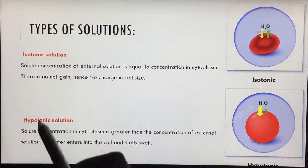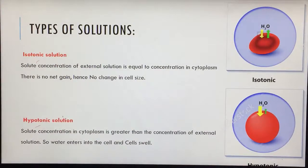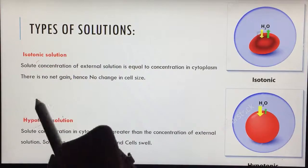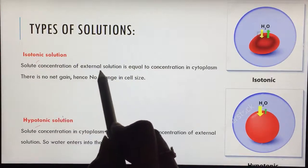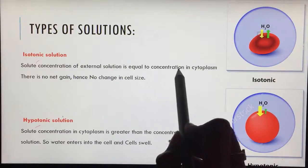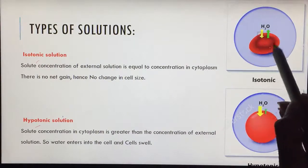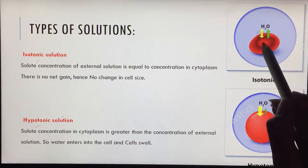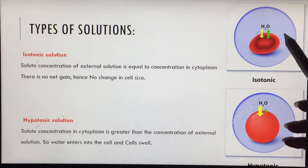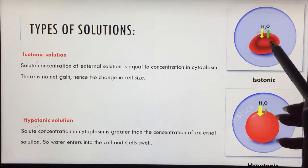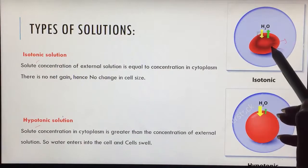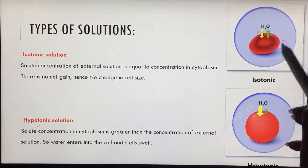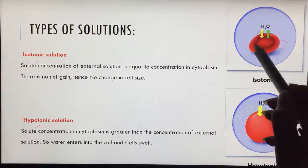Basically there are three types of solutions - isotonic, hypotonic and hypertonic. In isotonic solution, solute concentration of external solution is equal to the concentration inside the cytoplasm. Suppose this is the cell, inside concentration of solutes is same as the concentration outside the cell. So there is movement of water molecules, but the number of molecules that would move out would be same as number of molecules moving into the cell. The size of the cell does not change.